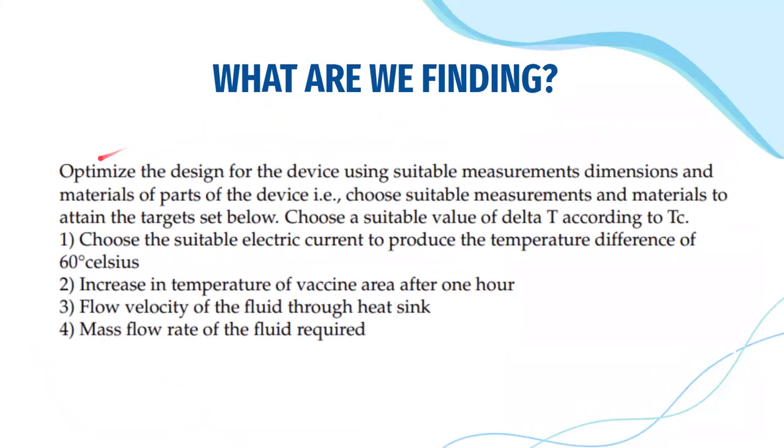So, what are we finding in it? We have to optimize the design for the device using suitable measurements, dimensions and materials of the parts of the device. That is, choose suitable measurements and materials to attain the target set below. Choose a suitable value of the delta T according to TC. Choose the suitable electric current to produce the temperature difference of 60 degrees Celsius. Increase in temperature of the vaccine area after one hour. Flow velocity of the fluid through heat sink. Mass flow rate of the fluid required.